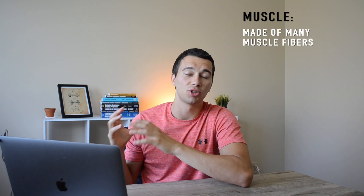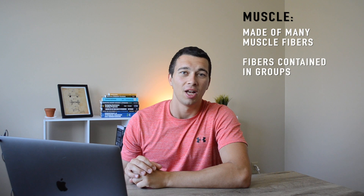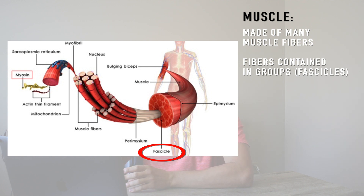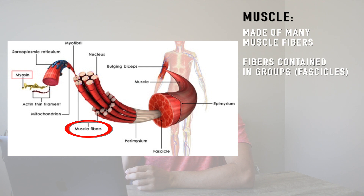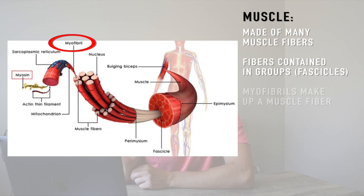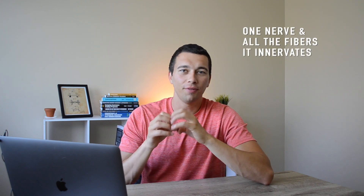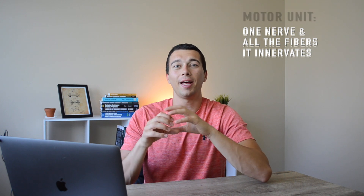To start off, let's lay the foundation with what we're talking about with muscles. If you think about your whole bicep, that contains a lot of muscle fibers, but there are also groups of fibers called fascicles. Within a fascicle you can see individual fibers, and at the very smallest level you'll see myofibrils. Each fascicle has one nerve that goes to it, and when we consider one nerve and all the muscle fibers it innervates, we call that a motor unit.